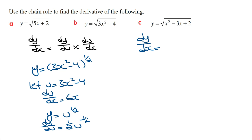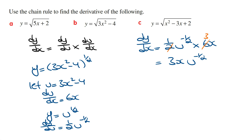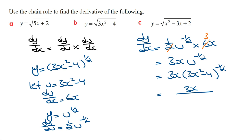So dy/dx equals dy/du which is a half times u to the power of minus a half, times du/dx which is 6x. Simplifying, the 2 and the 6 cancel out leaving a 3, so this is 3x times u to the power of minus a half. Replacing u as a function of x gives 3x times 3x squared minus 4 to the power of minus a half. Rewriting with the square root sign, this is the same as 3x over the square root of 3x squared minus 4.